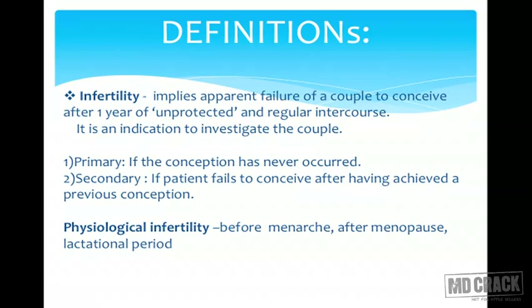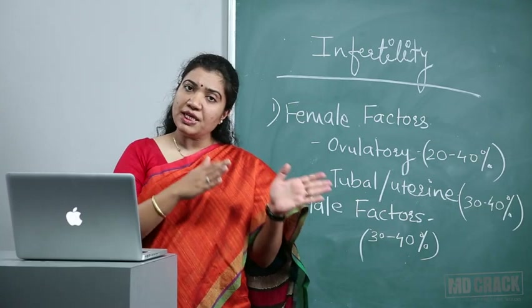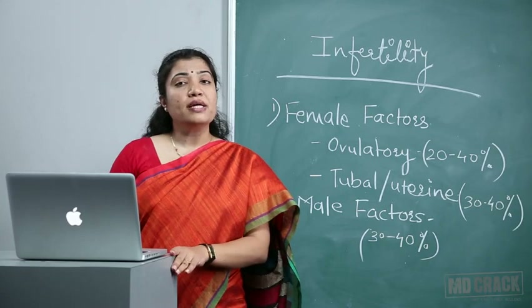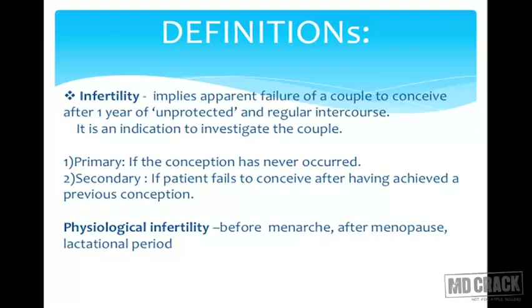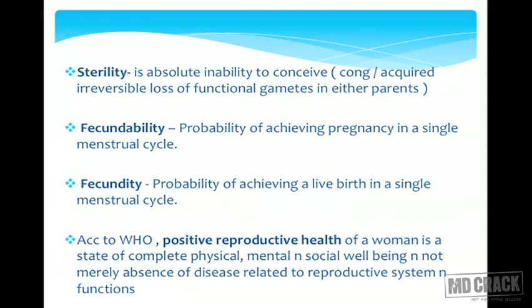Infertility can be primary or secondary. Primary infertility means conception has never occurred in that particular couple. Secondary infertility means the couple has either had an abortion, a live birth, or a stillbirth before — they have conceived previously but are now unable to conceive again. Physiological infertility occurs before menarche, after menopause, and during the lactational period — these are physiologically infertile periods due to absence of ovulation.